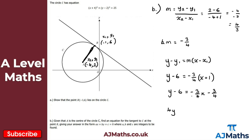Now rearranging to the form Ax plus By plus C equals zero: taking minus 3x and minus 3 across to the left side gives positive 3x and 4y. Adding 3 to minus 24 gives minus 21. So the equation is 3x plus 4y minus 21 equals zero. That is the equation for the tangent to C at point B.